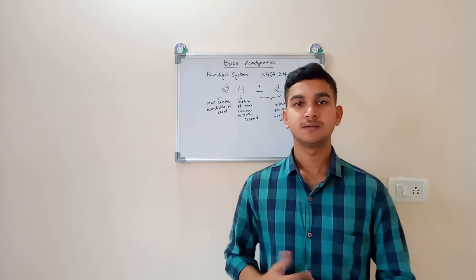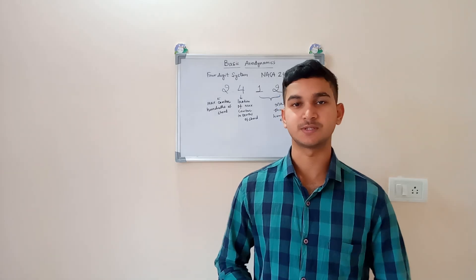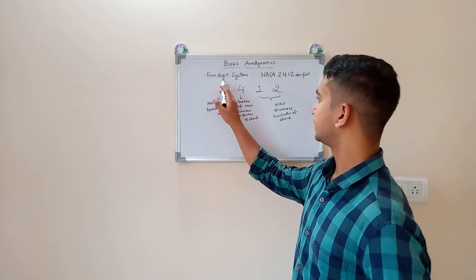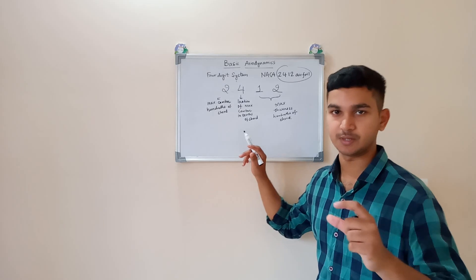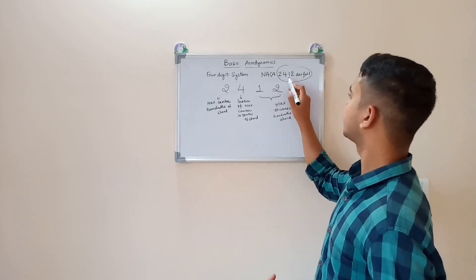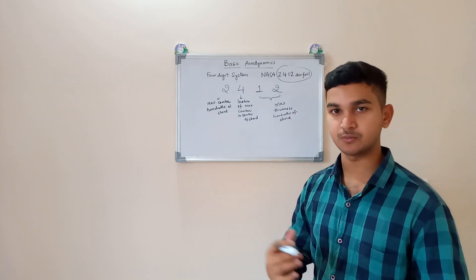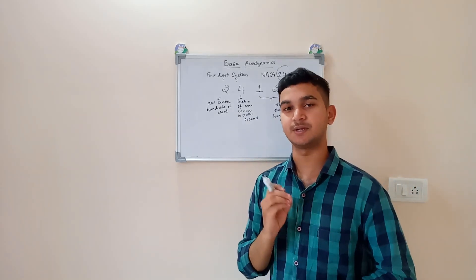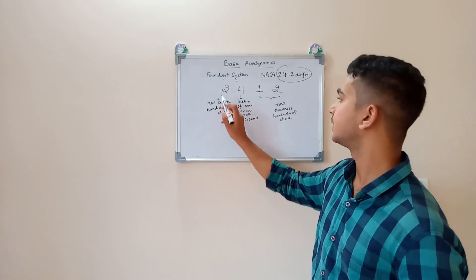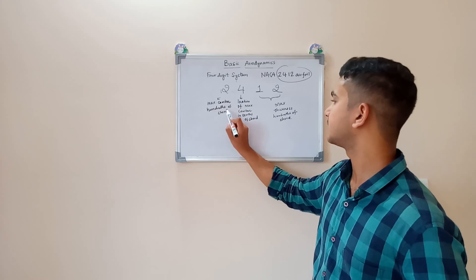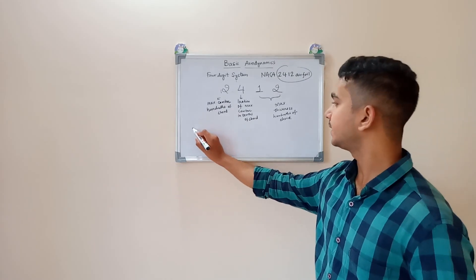Coming to the airfoil, NACA introduced a series of airfoil sections. One of them is the four-digit system. For example, NACA 2412. The first digit of the four-digit system indicates the maximum camber in hundredths of the chord. So the digit '2' means the maximum camber is 0.02 of the chord.